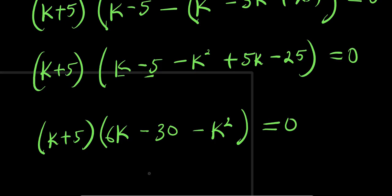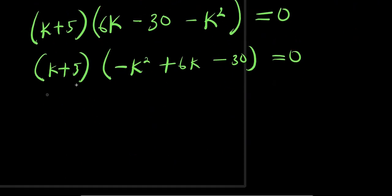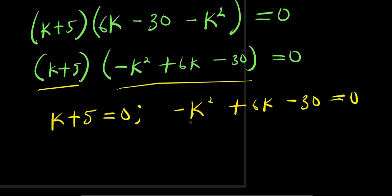Rearranging, we have (k plus 5)(minus k squared plus 6k minus 30) equals zero. Setting each factor to zero: k plus 5 equals zero gives k equals negative 5 as the first solution.